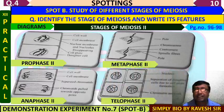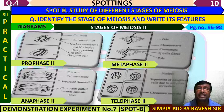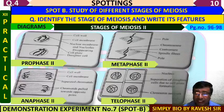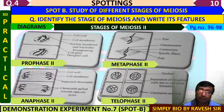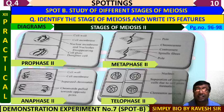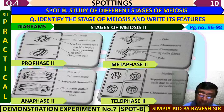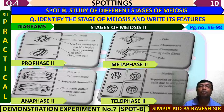Last is Telophase 2, resulting in four distinct haploid cells. The nuclear membrane and nucleolus are reorganized. In plant cells, a cell plate forms, while in animal cells cleavage occurs. One cell ultimately gives rise to four haploid cells.